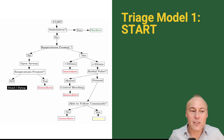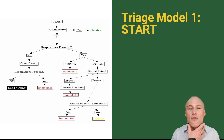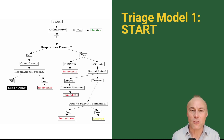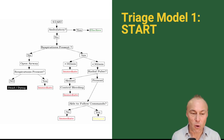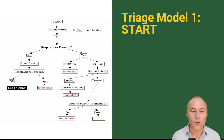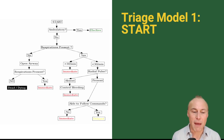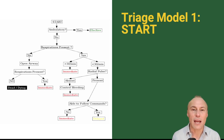If you can't walk, we assess for respirations. If there are no respirations present, we're allowed to do a jaw thrust or a chin lift to see if we can allow the patient to develop respirations. If they still have no respirations, they're considered black, expectant, or not salvageable. If respirations are present, we look at their rate — is it greater or less than 30 per minute — then we look at the radial pulse and the patient's ability to follow commands, sorting them into four categories.